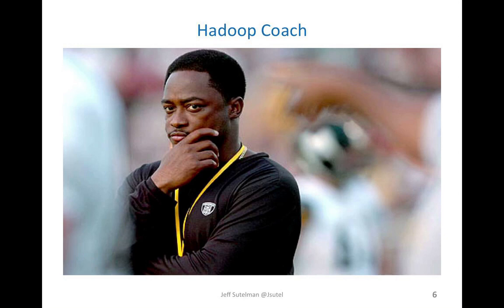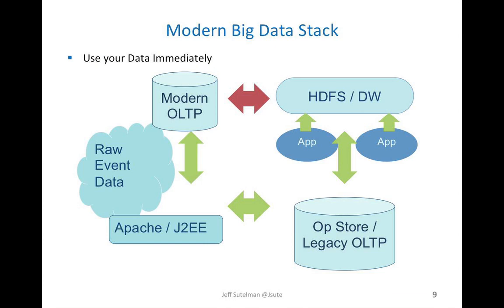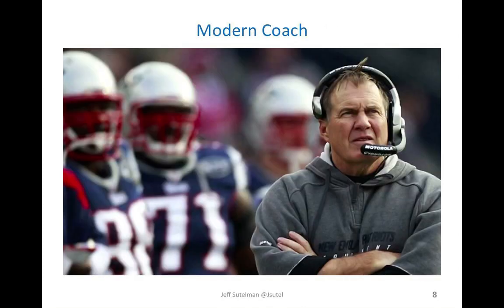Looks like the Hadoop coach is out of a job too. Let's go to our modern coach. He's running a completely modern big data stack, harnessing the power of VoltDB. Coach calls up his analytics department: 'Fourth and one against the Raiders — what do I do?' They call back: 'Coach, fourth and one against the Raiders is successful 60% of the time historically. We've got data all the way back to the 1950s, and we can tell you that runs to the right of the formation work 88% of the time on fourth and one.'